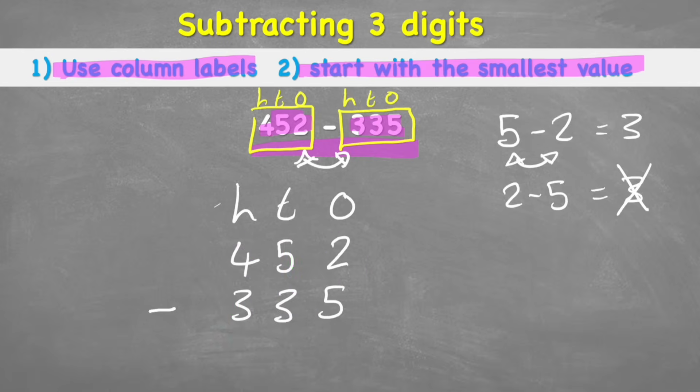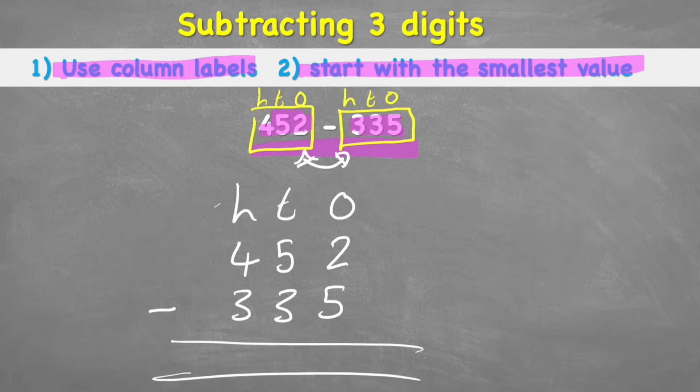Now I'm ready to begin. So let's put my equals line, and I can begin. My second tip said to start with the smallest value. And in this case, the smallest value is, of course, our 1s. And in the 1s column, we have the question 2 subtract 5.